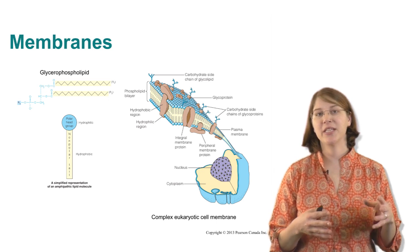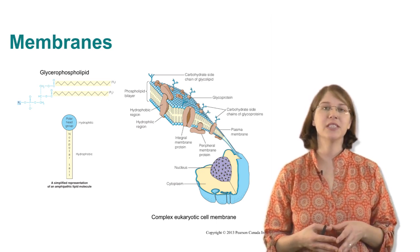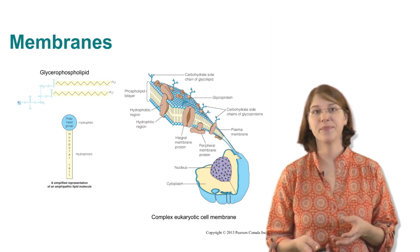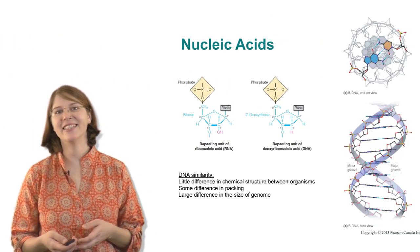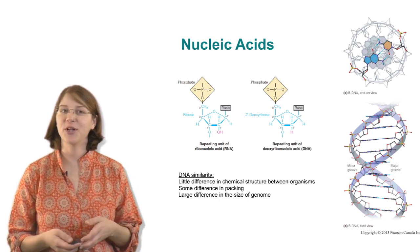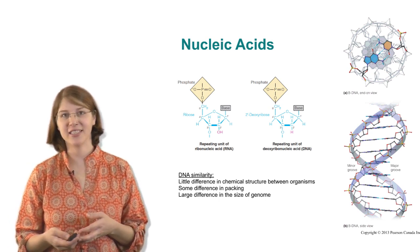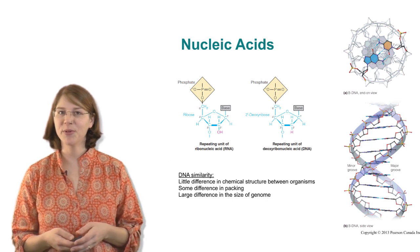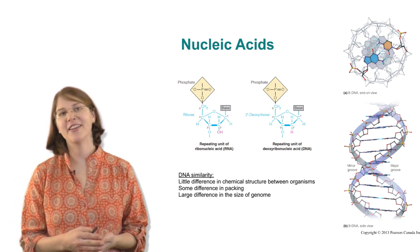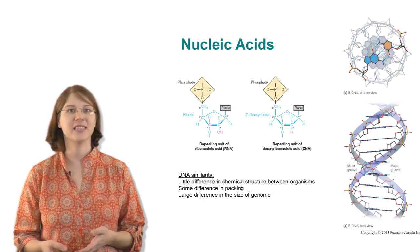Membranes are used to separate cells from one another, they're also used to separate organelles from other parts of the cell. One organelle is the nuclear membrane which separates the nucleic acids from the cytosol in eukaryotic cells, so you can see that in this picture in purple, and the nucleic acids are another component that all living things have in common.